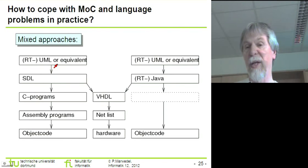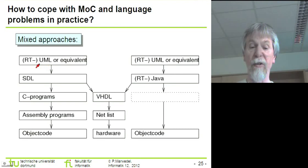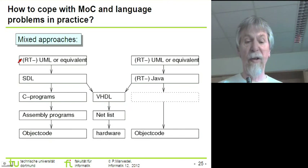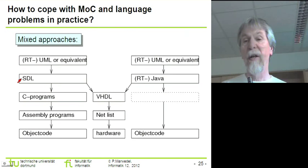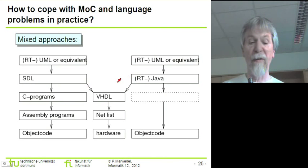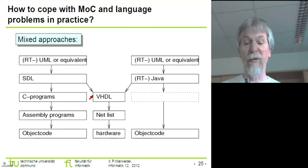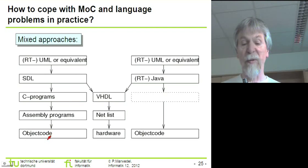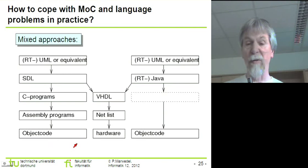If we have to live with compromises, we typically have to use mixed approaches — a number of models of computation. For example, at a high level we could start with UML, a variant specialized for real-time systems. There are techniques for deriving from UML some implementation information for SDL or Java. From SDL it's feasible to generate VHDL, and from VHDL we can generate the netlist and hardware. On the software track, we can generate C programs from SDL, and from those generate assembly and binary programs.